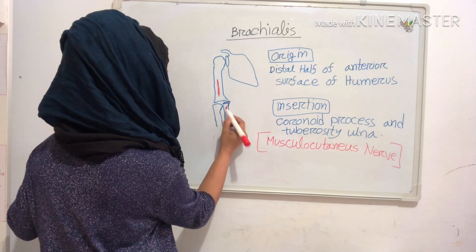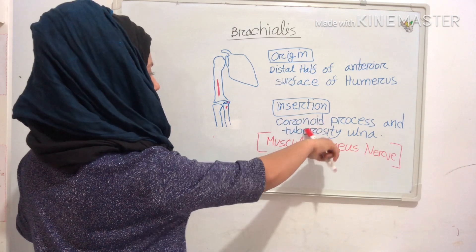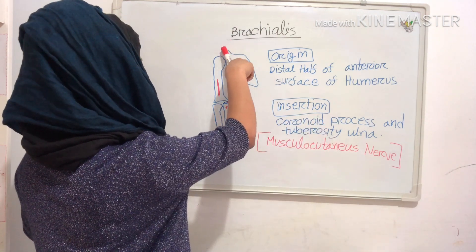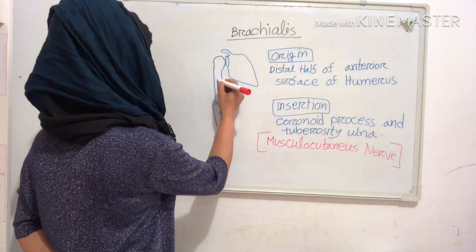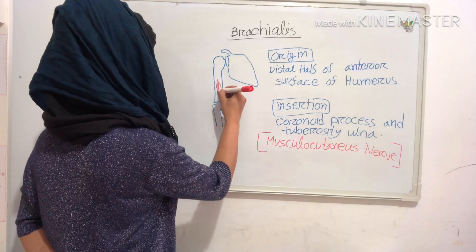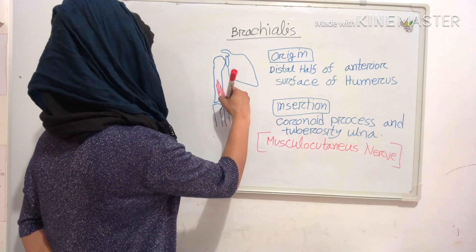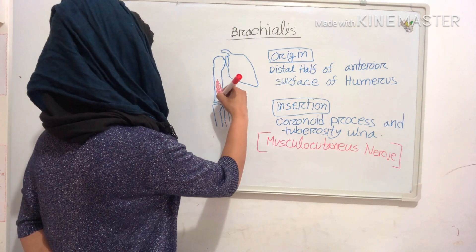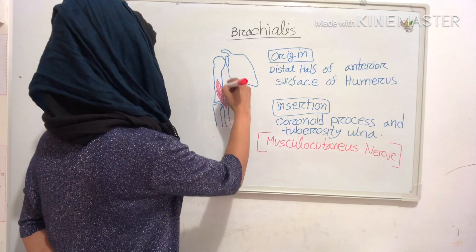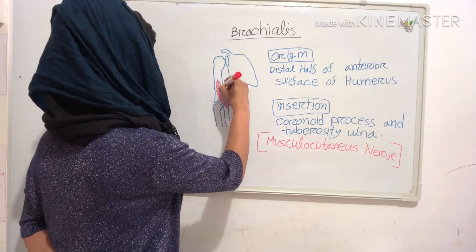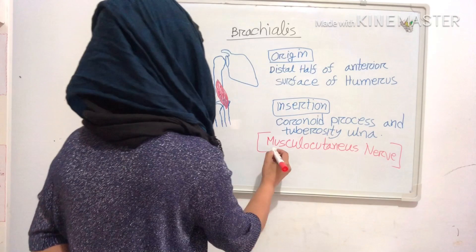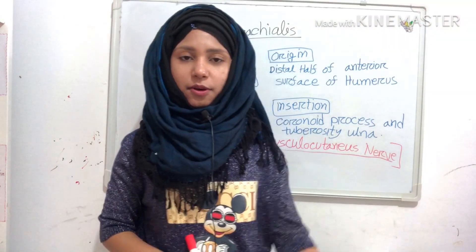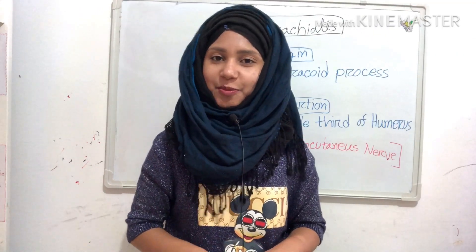Don't confuse coronoid with coracoid — this is the coracoid process of the scapula and this is the coronoid process of the ulna. This is our brachialis muscle, and this muscle is also supplied by the musculocutaneous nerve. This muscle also flexes the forearm.